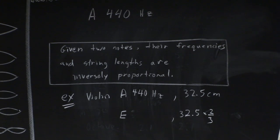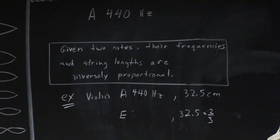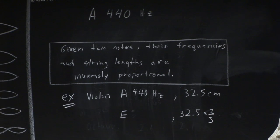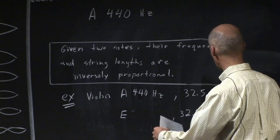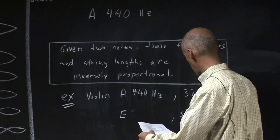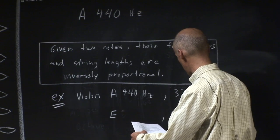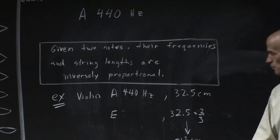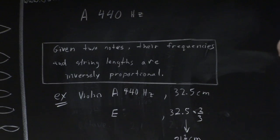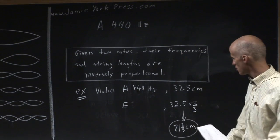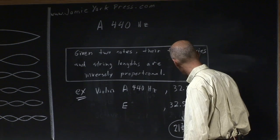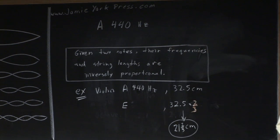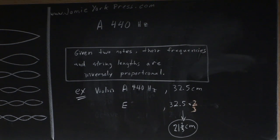When we multiply that out, this is going to be 21 and two-thirds centimeters. That's the length of the string. What did we do there? We multiplied by two-thirds because the ratio was three to two.